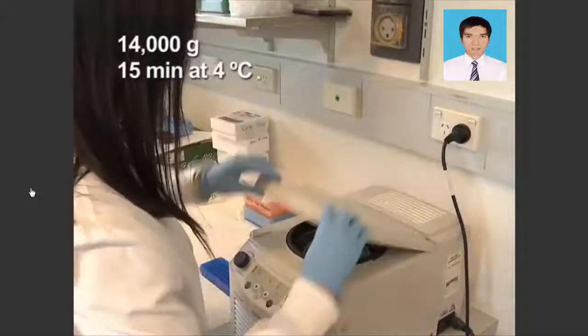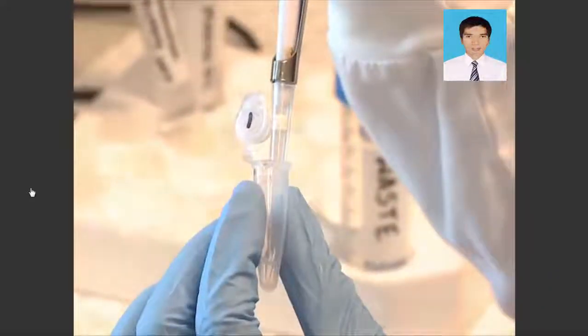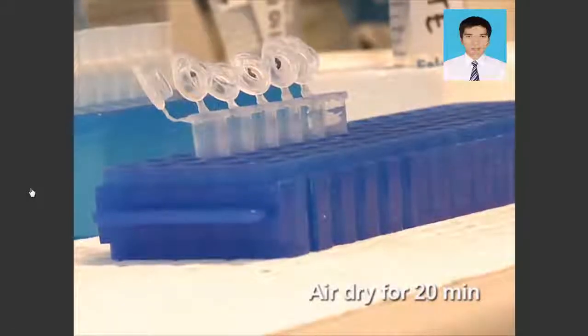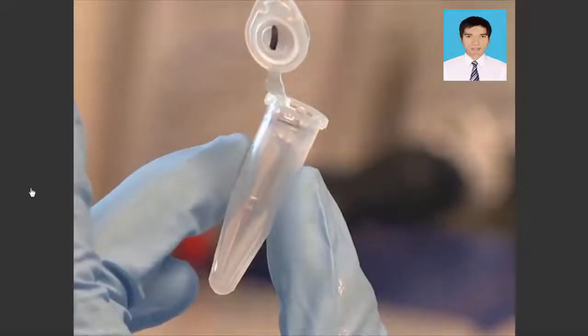Centrifuge at 14,000 G's for 15 minutes at 4 degrees Celsius. Then remove all traces of supernatant and air dry the precipitated DNA for approximately 20 minutes. After air drying, the pellet is almost impossible to see.